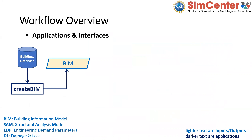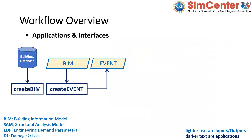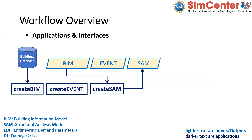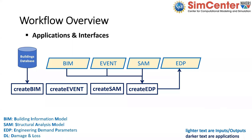Starting from a building database, we create a building information model. Given the BIM — which includes location, year built, and similar information — we use the create event process to find the event input on this building. For an earthquake scenario, given the building location and its distance from the earthquake rupture, we use models to evaluate the ground motion. For a different hazard, it may require building geometry or dimensions as well.